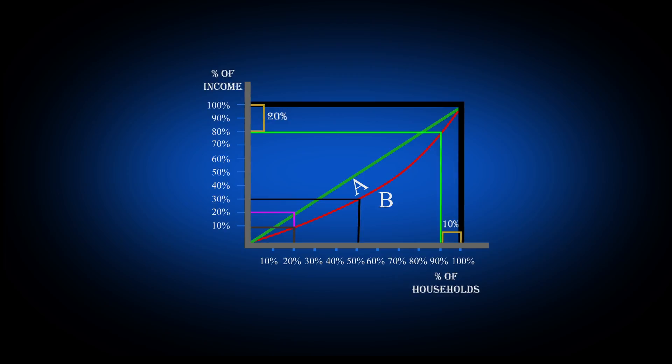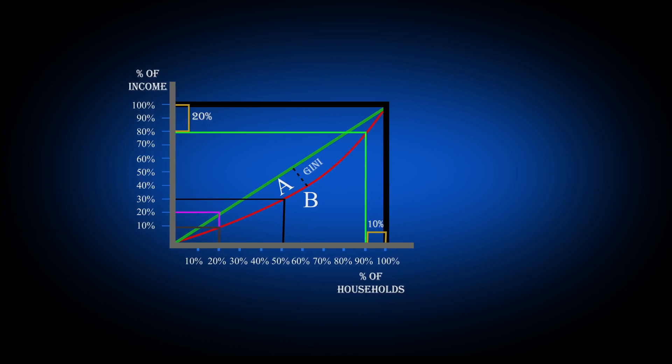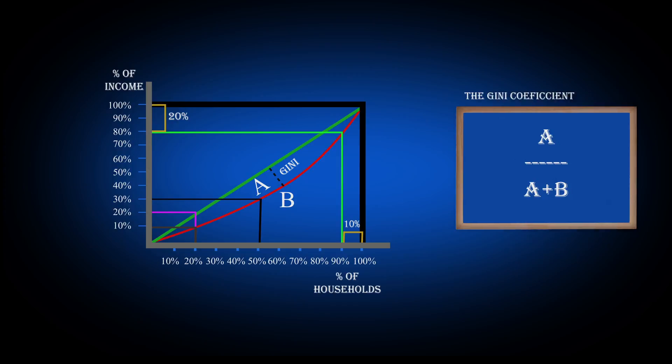The dispersion between the line of equality and the Lorenz curve is called the Gini index, which could be measured by dividing area A by area A plus B, giving a result between 0 and 1.